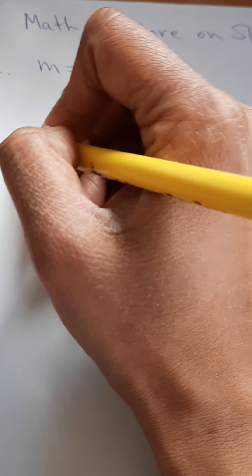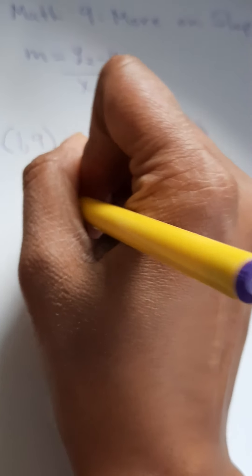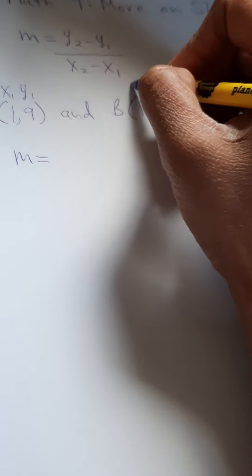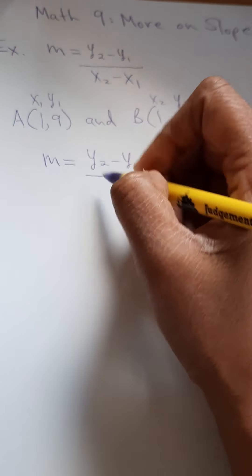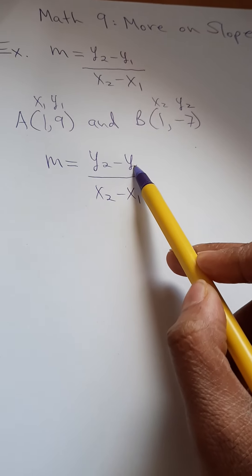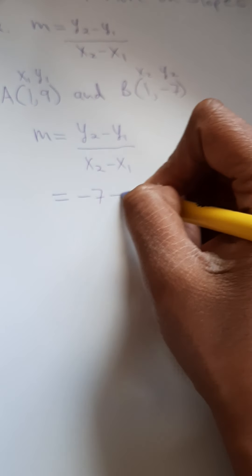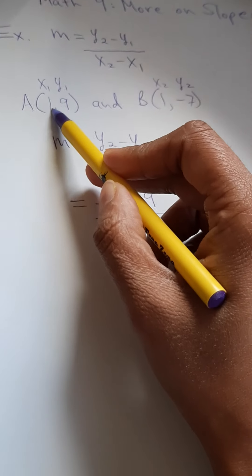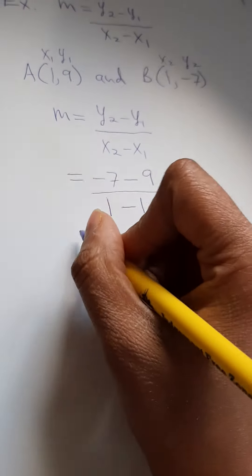Let's first try finding the slope. Say I have two points: point A which is (1, 9), and point B which is (1, -7). I'm just going to label my two points x1, y1 and x2, y2. We're going to plug it into the formula — make sure the y components are on top and the x components are on the bottom. So y2 is -7, minus y1 which is 9, over x2 which is 1, minus x1 which is also 1.